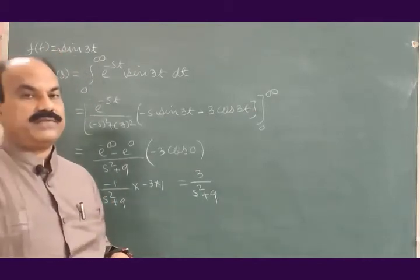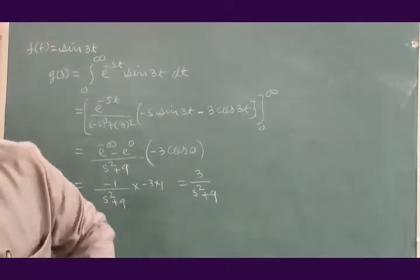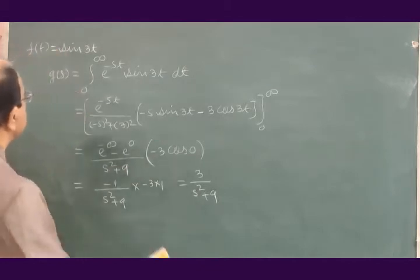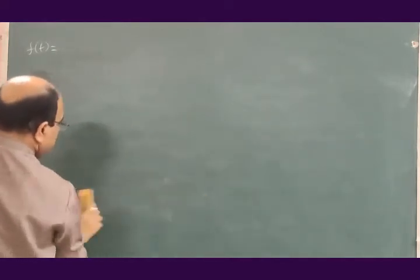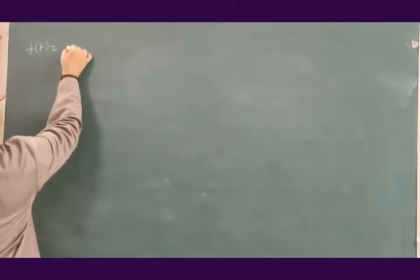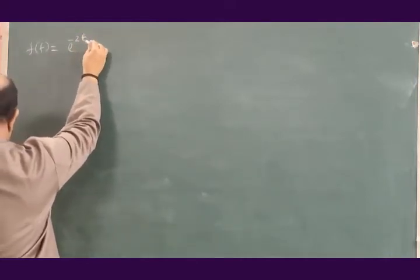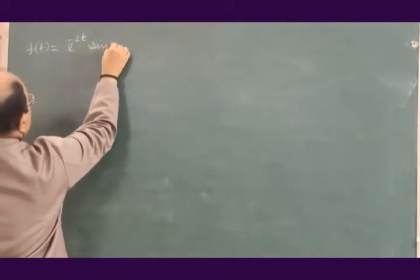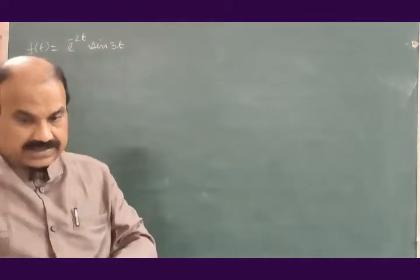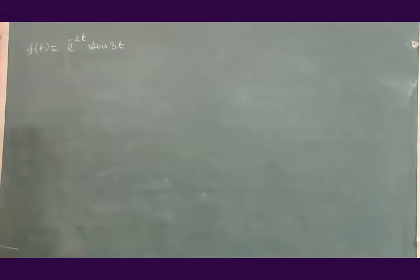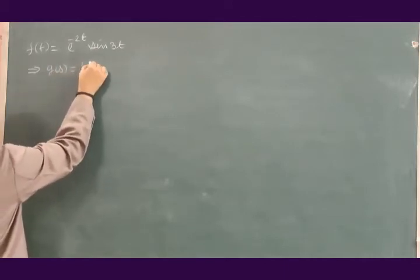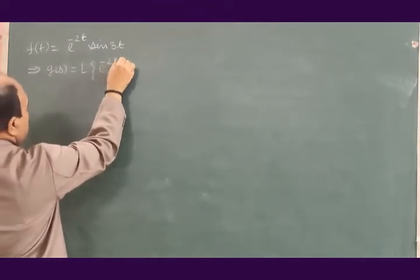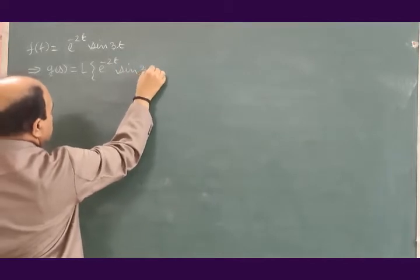Let us go to the second problem. The second problem is: f(t) is equal to e to the power minus 2t times sin(3t). Let us see how to solve this. G(s), or the Laplace transform of e to the power minus 2t times sin(3t).